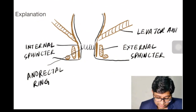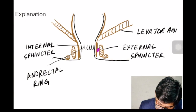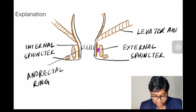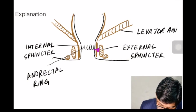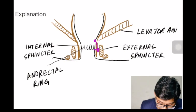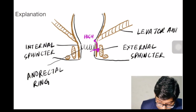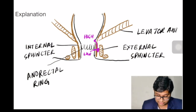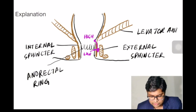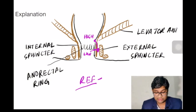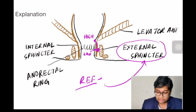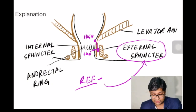The theory of genesis of anorectal abscess is that the anal glands, which lie between the internal sphincter and the external sphincter, get infected first and they burst inside, usually at the level of the anorectal ring or above it. If they burst above the anorectal ring, it is called a high type of anal fistula; if they rupture below the anorectal ring, they are called low type. The reference point for defining the type is the external sphincter.